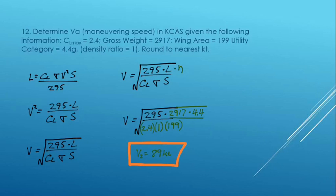And so everything is worked the same as the previous problem, except we use 4.4 G's instead of 3.8. So the wing would have to generate more lift. And the stall speed, or the maneuvering speed, would go up accordingly. And so that calculates to 89 knots.